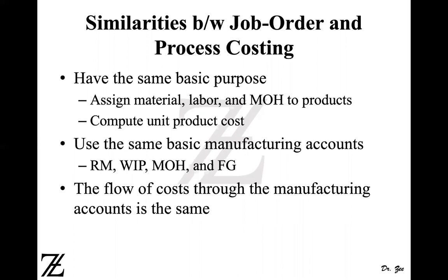Otherwise the flow is the same. From material inventory, if it's direct material it goes to work in process; if it's indirect material, it goes to manufacturing overhead. Same with labor — direct labor goes to work in process, indirect labor goes to manufacturing overhead. Once you complete the product, it transfers to finished goods inventory. You debit finished goods inventory and credit your work in process. So the flow is the same under process costing as well.